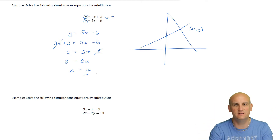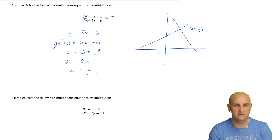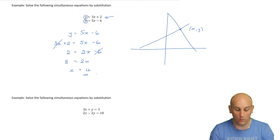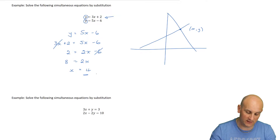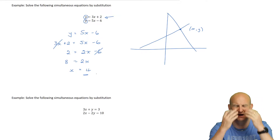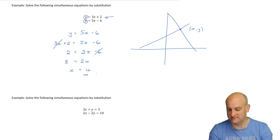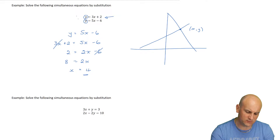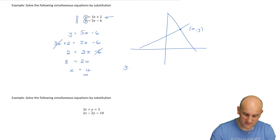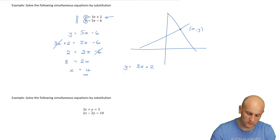You've only found one part. Simultaneous equations are coordinates - you have to find both x and y. Having found my x value, how do I find y? Using the first equation: y equals 3x plus 2. Now I know x is 4, so y equals 3 times 4 plus 2, and y equals 14.